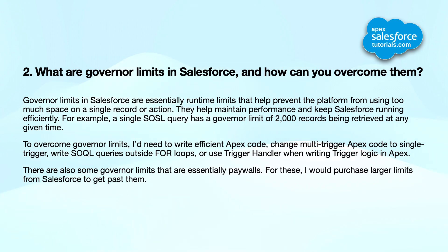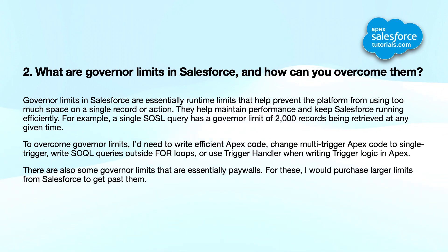To overcome governor limits: change multi-trigger Apex code to a single trigger, write SOQL queries outside of for loops, or use a trigger handler when writing trigger logic in Apex. There are also some governor limits that are essentially paywalls — for these, you would need to purchase larger limits from Salesforce to get past them.